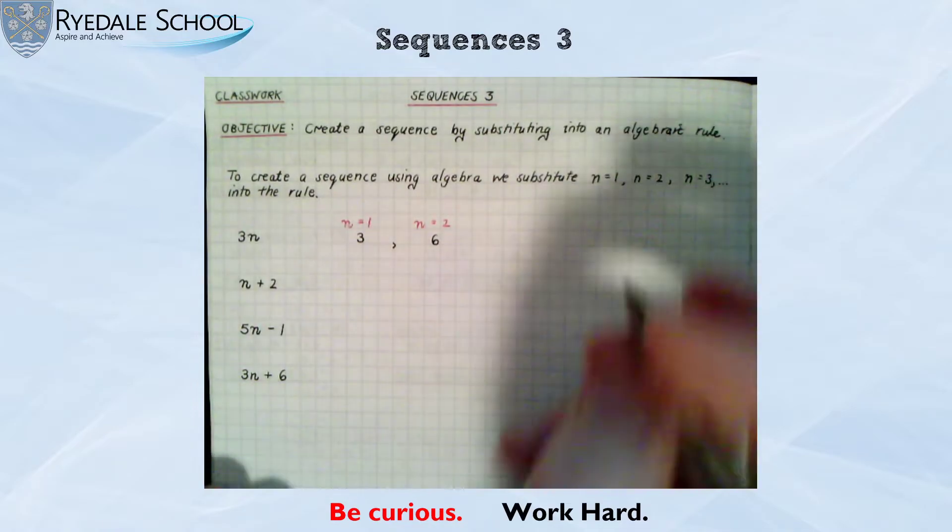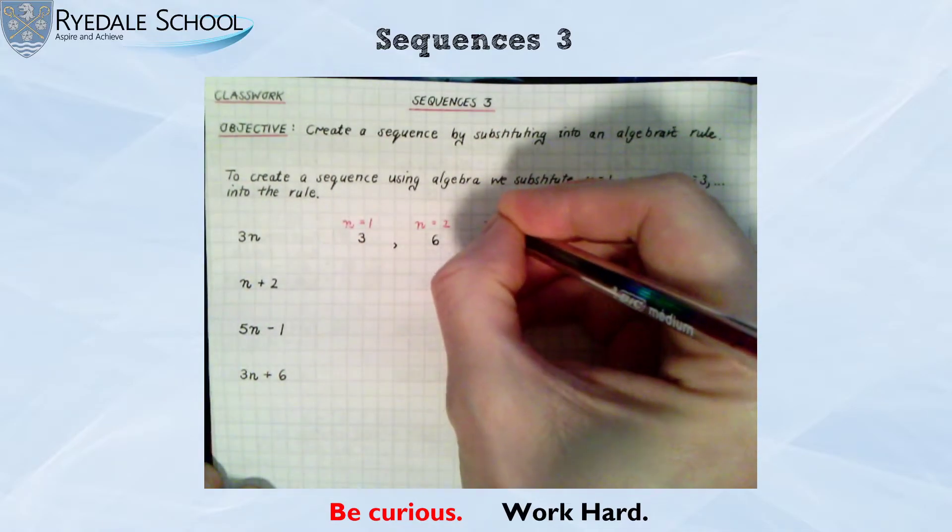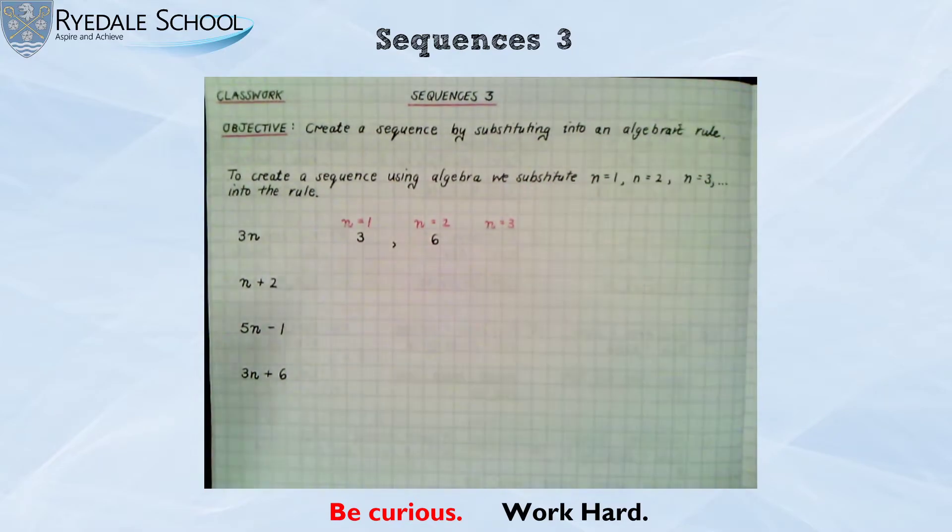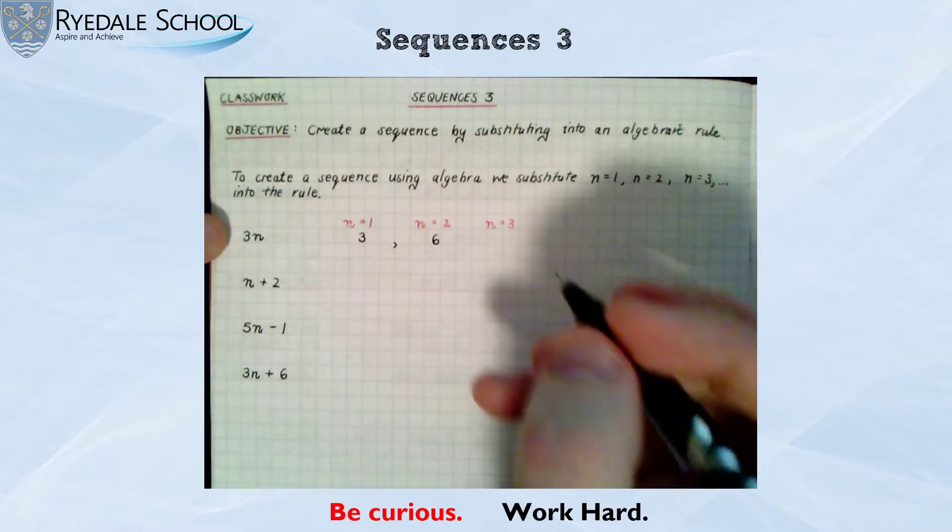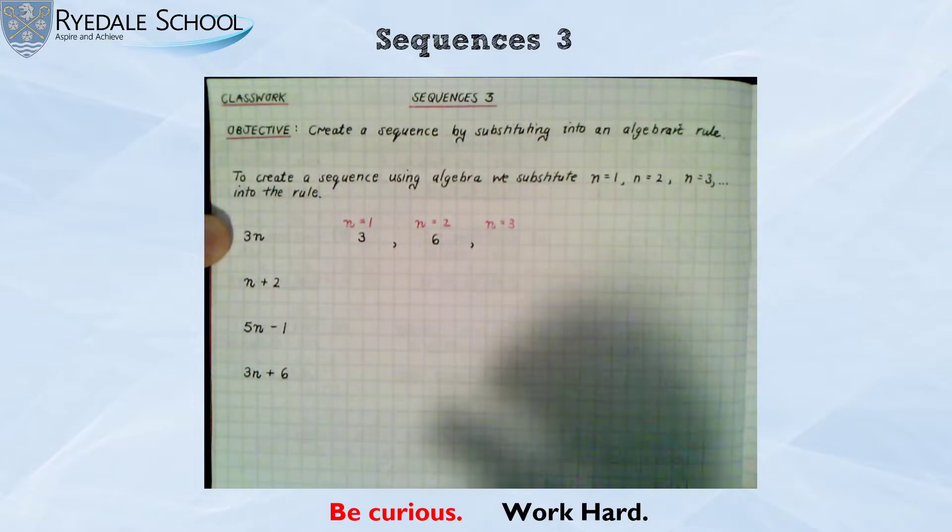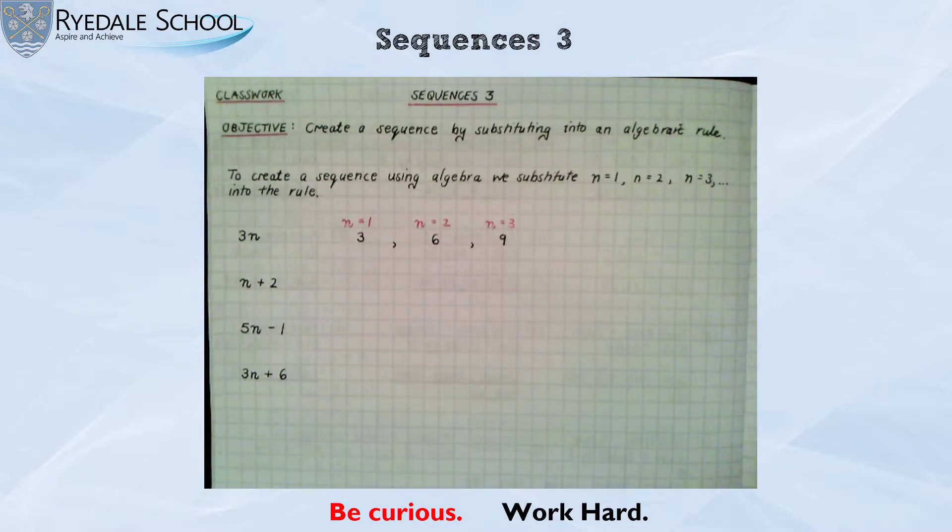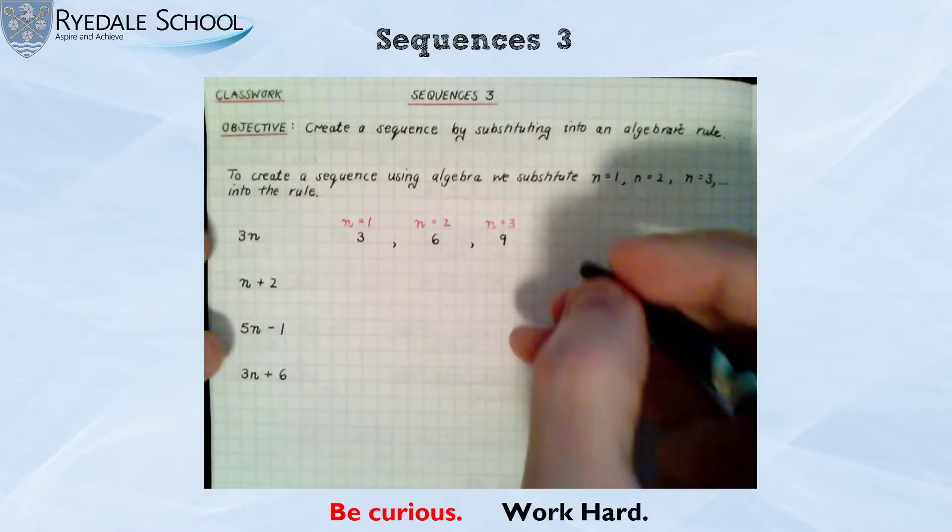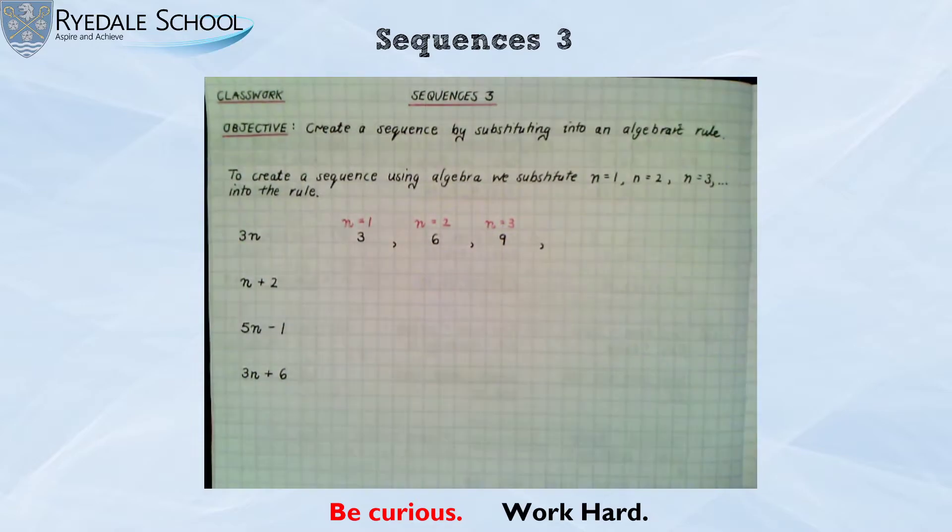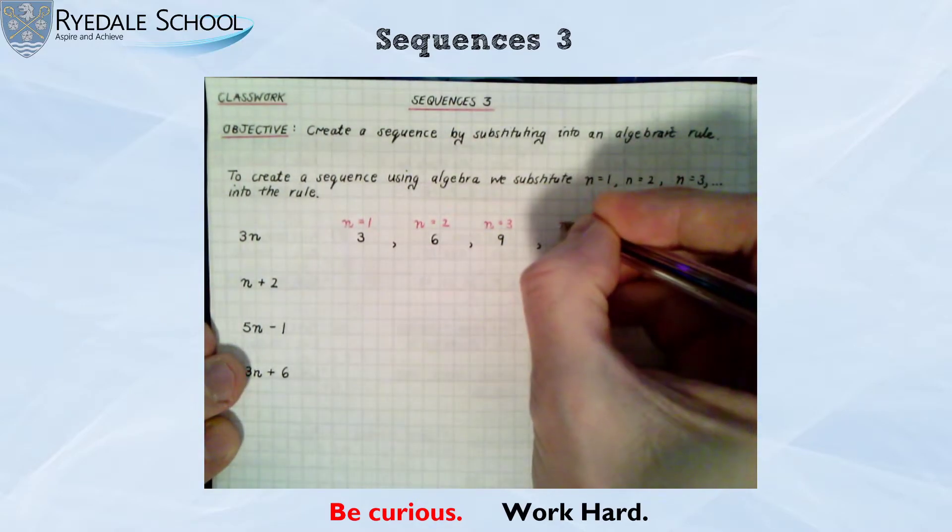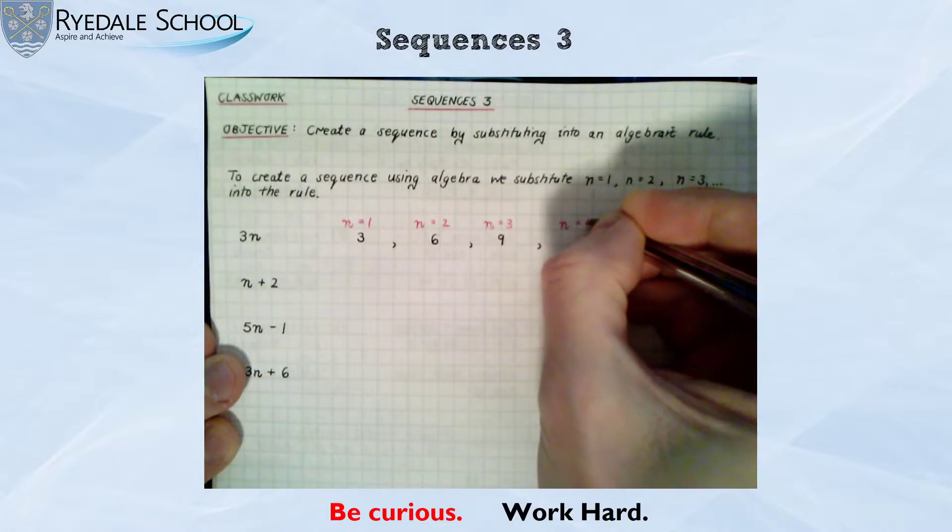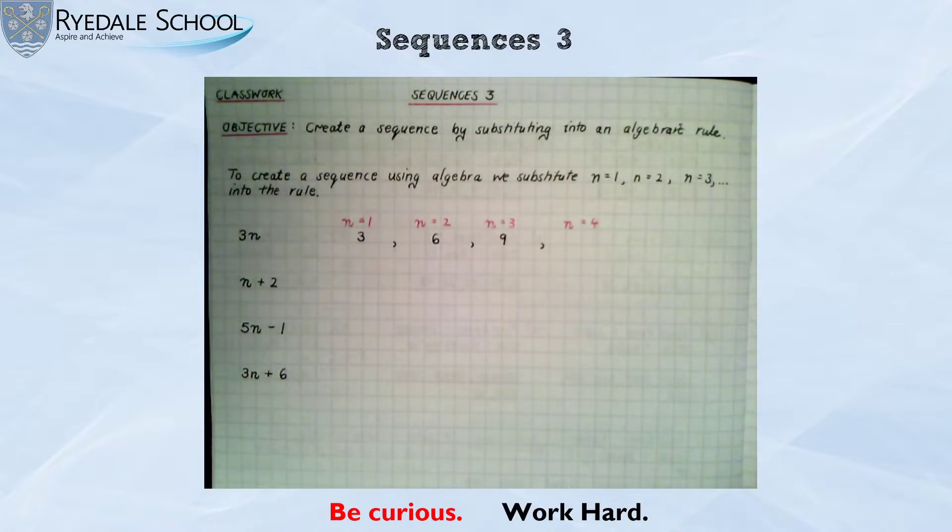If I want the third term yes you've guessed it I have to substitute n is 3. So my rule is 3n, so it's 3 times 3. That is 9. And this pattern carries on. So I'm going to substitute n is 4. But sometimes when you've done the first few terms you can quite often start to see the pattern, start to see what this sequence is doing. And I'm sure some of you have spotted.